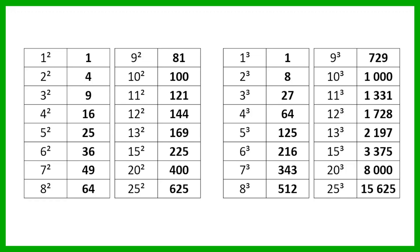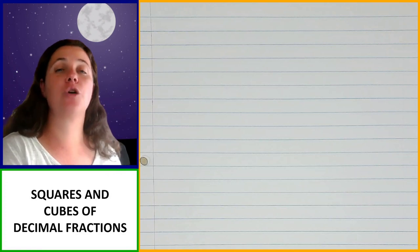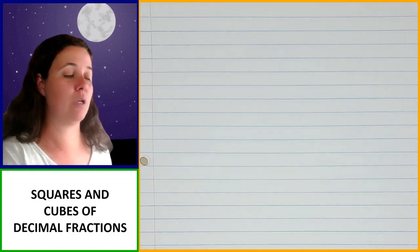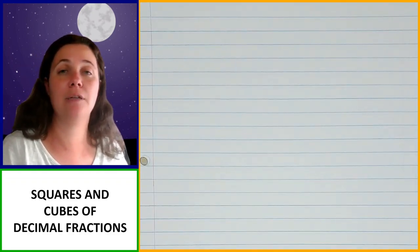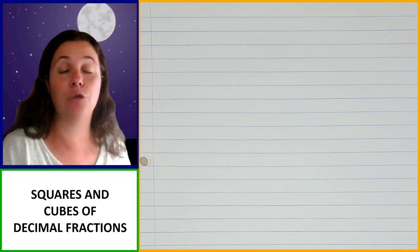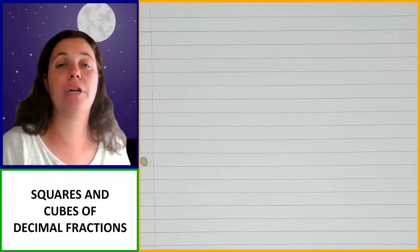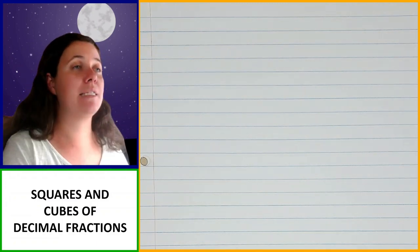Now let's have a look at squaring and cubing decimal fractions — finding the squares and cubes of decimal fractions. What we've already learned about multiplication of decimal fractions is going to help us in this section, and this is actually something we've already touched on earlier in the year. Just to remind you: when you are multiplying decimal fractions together, you multiply the number part and ignore the decimal, then count how many decimal places there are — your product needs to have that same number of decimal places.